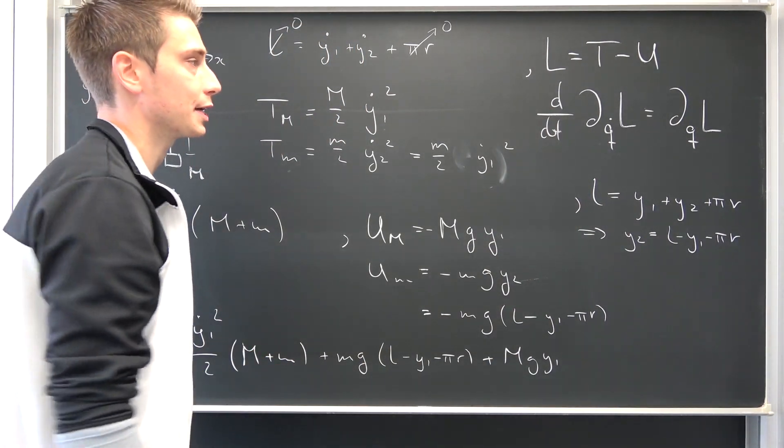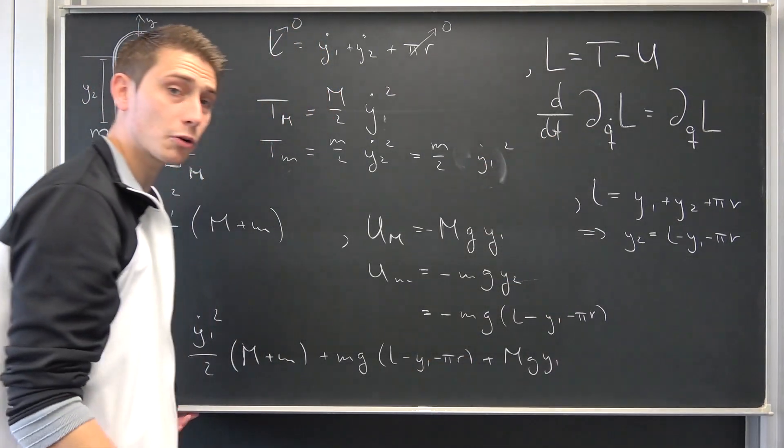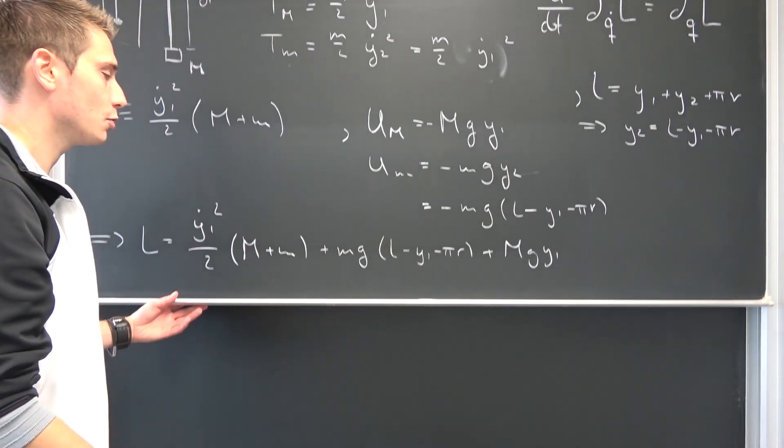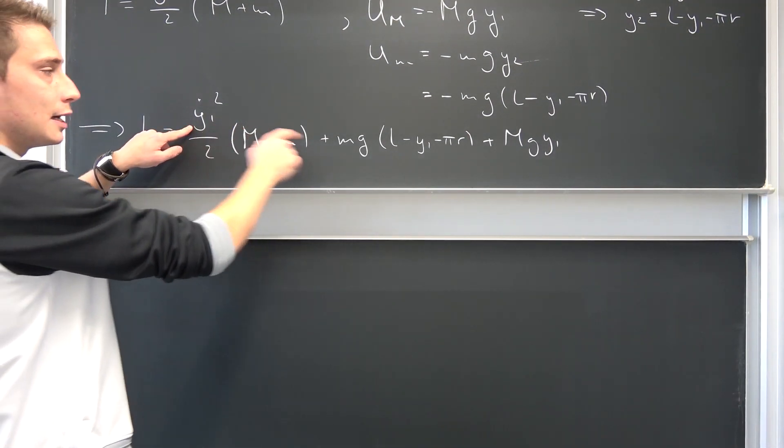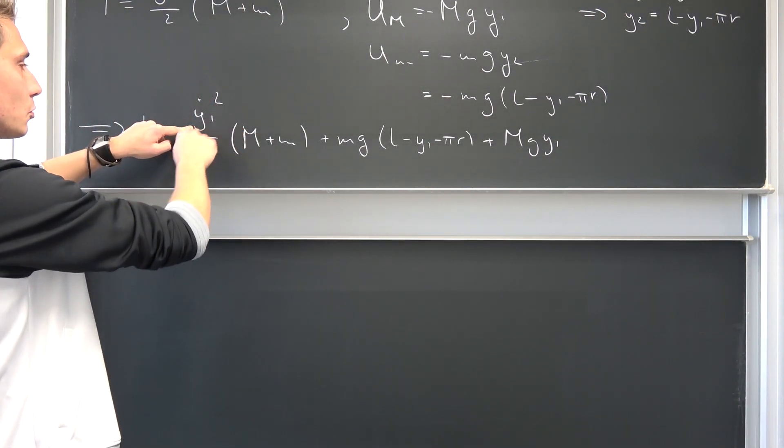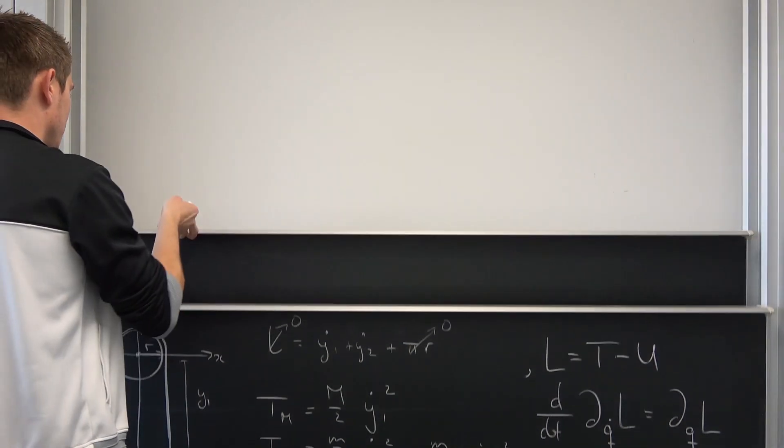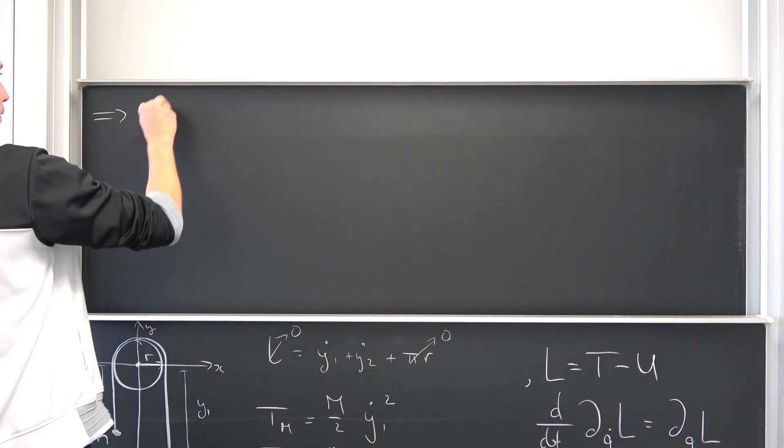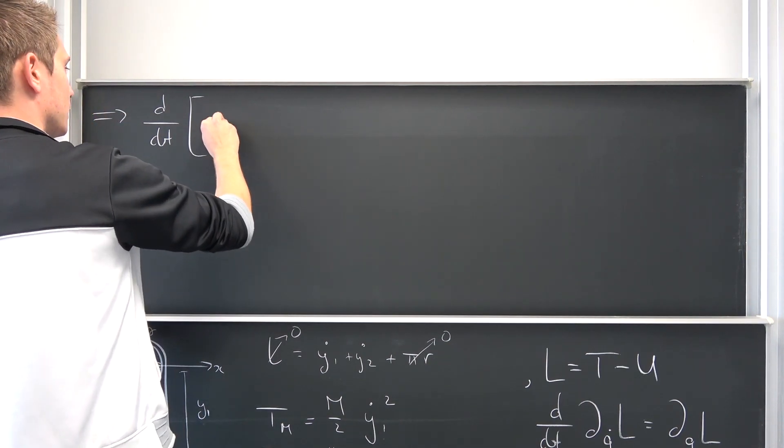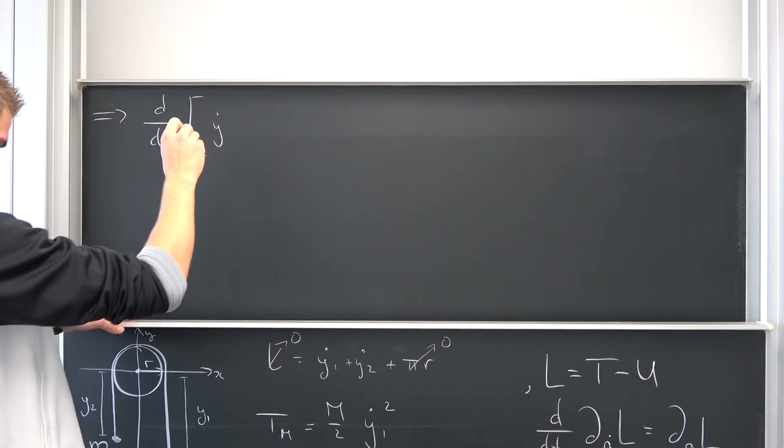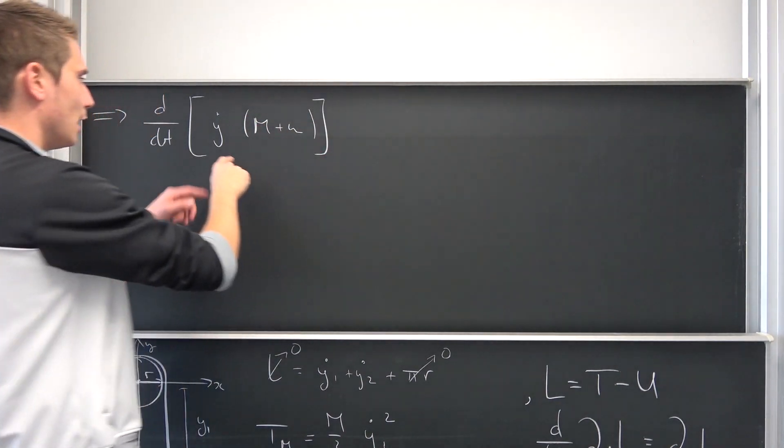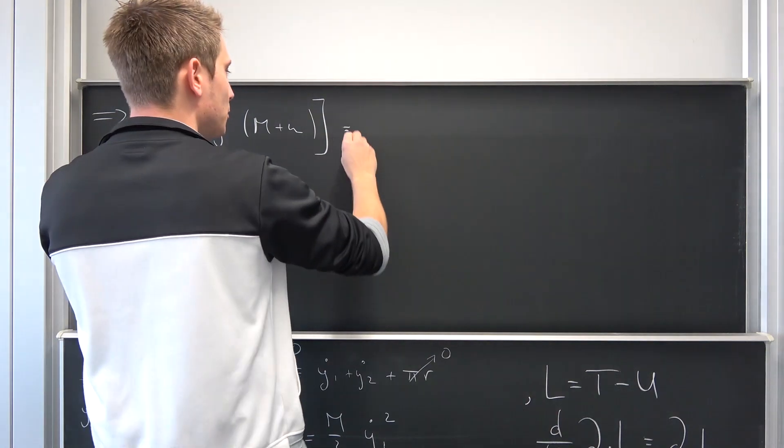Let us start with this thing right here. We are going to differentiate at first our Lagrangian partially with respect to Y1 dot. All of this is going to vanish, just like the last time with the inclined plane. We are going to drag the two down, leaving us with d/dt of, and thus Y1 dot times M plus m. And now we are going to differentiate this with respect to time.